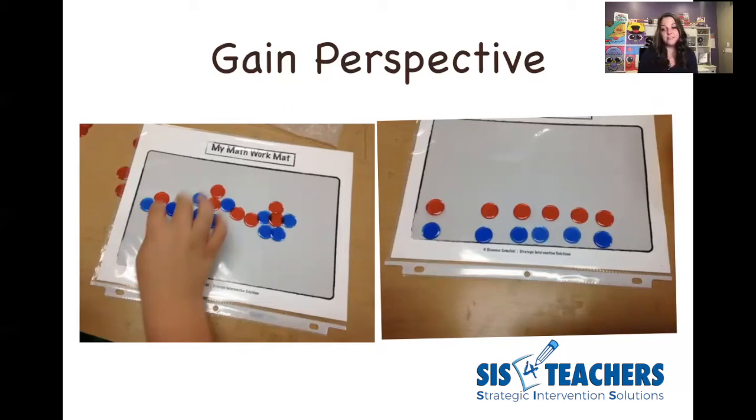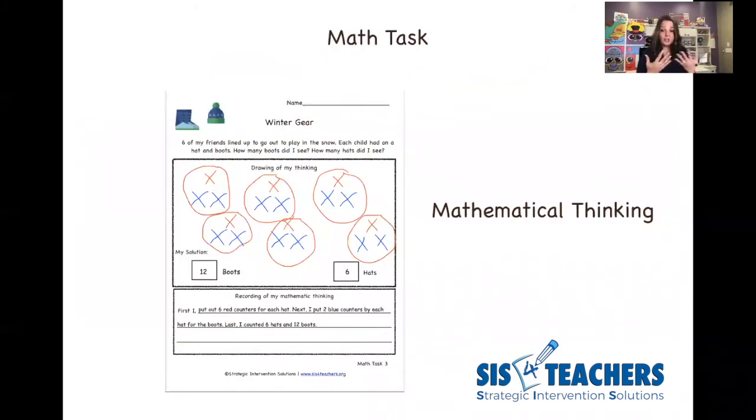Some students, you really want to gain perspective. We have the child off to the right that does have their six hats and has six blue counters. When I went up to this child, they said that those red counters on the screen were their hats, but each blue counter was actually worth two. So when they skip counted two, four, six, eight, 10, 12, they were able to tell me there were 12 boots. The child on the left, I really needed to do some perspective gaining because I thought they were making flowers, but in fact, they were making people that are holding hands and there is a hat and boots. It's all about gaining the perspective of how the child is really going through the task. You're questioning, not lecturing. You're asking open-ended questions, getting that metacognition to really start to work.